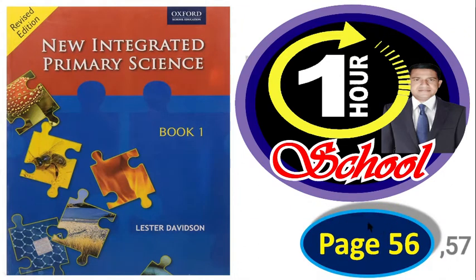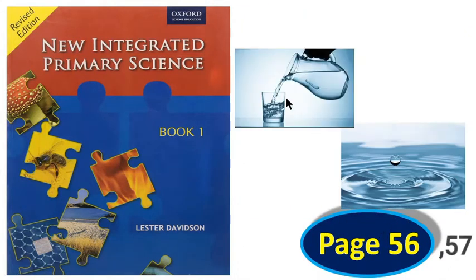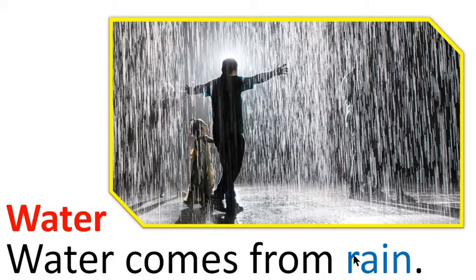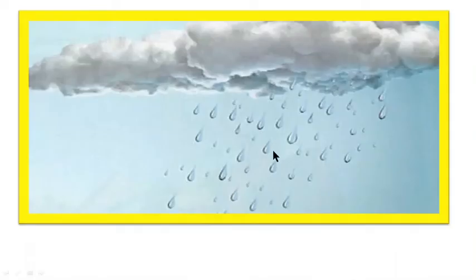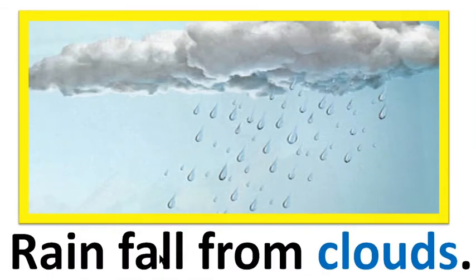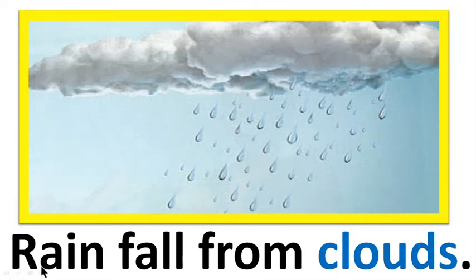Page number 56, we will learn now about water. Water comes from rain. In this picture we can see rain. Water comes from rain — rain falls from clouds. These are clouds and these are water drops, so we can say rain falls from clouds.